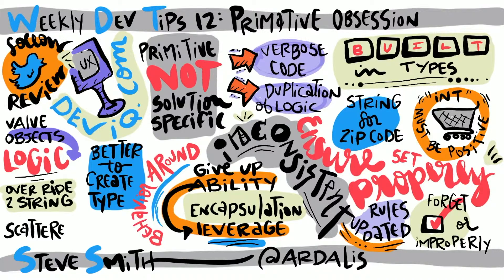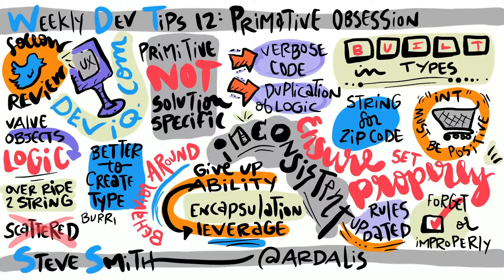When you can represent a concept in your system with a primitive type, what you're doing is asserting that the concept can be represented by any value that type can hold. If you expose method signatures that accept primitive values and the only clue you offer to clients of that method about what type of values should be provided is the names of these parameters, you're just asking for problems. Invalid values might not be immediately discovered, or if they are, the related errors could be buried deep within the behavior of the method rather than immediately apparent.